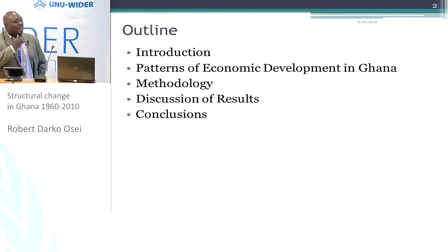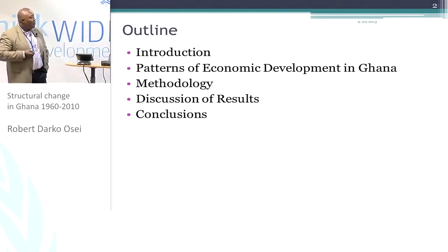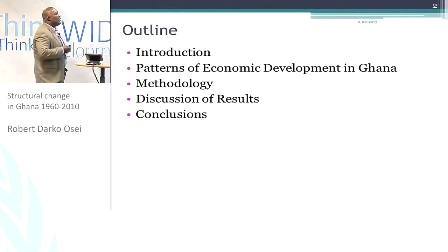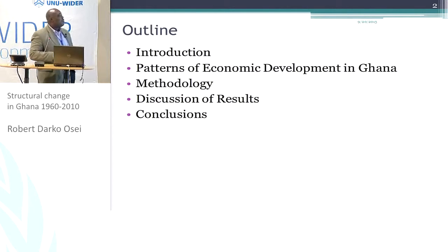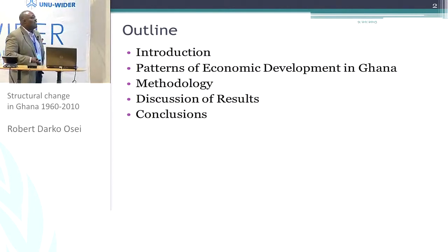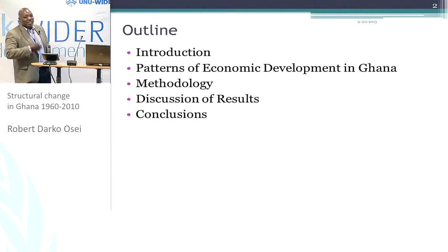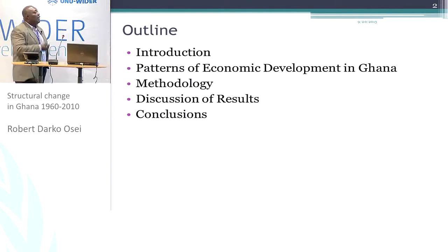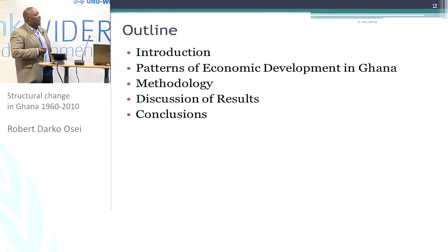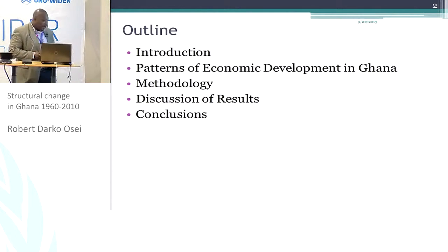In terms of outline, just briefly introduce the paper, set the context by talking a little bit about the patterns of development in Ghana — these days it's even boring to talk about it because everybody knows it — then highlight the methodology, which was suggested by Maggie and Danny Roderick, and then discuss the results and present some concluding comments.